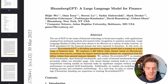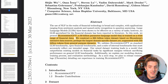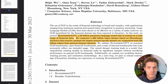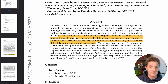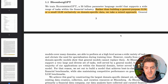Bloomberg GPT is a 50 billion parameter language model and it's trained on a wide range of financial data. They have a 363 billion token dataset based on Bloomberg's financial data, and they also use 345 billion tokens on general purpose data that you can find anywhere. Rather than building a general purpose LLM or a small LLM exclusively on domain-specific data, they took the mixed approach — a little bit of both.